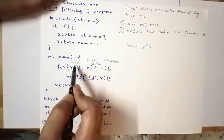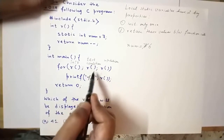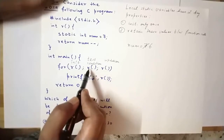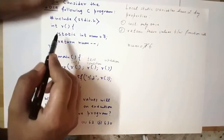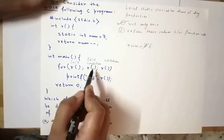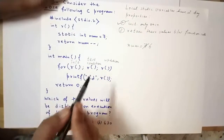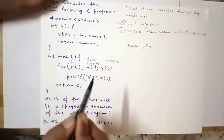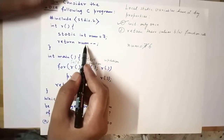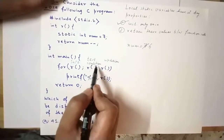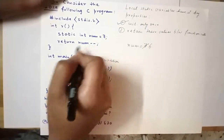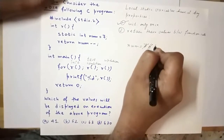In the test condition, the function r is invoked again. Since local static variables are initialized only once, the initialization statement is skipped and we go directly to the return statement. The current value of num is 6, so 6 is returned in place of the function call. After the return, num is decremented to 5.